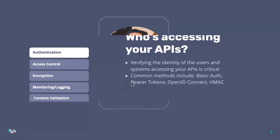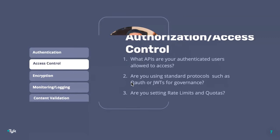Authentication is just the first step. Once a user's identity has been verified, there needs to be a way to enforce what APIs and data that user has access to. Are you using standard protocols such as OAuth or JWTs for governance? These two protocols make it easy to delegate access — you can map scopes in the case of OAuth, or claims in the case of JWTs, to access control policies to determine what your token holders should have access to.